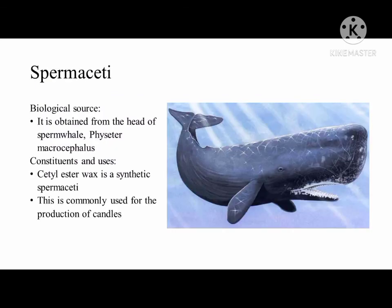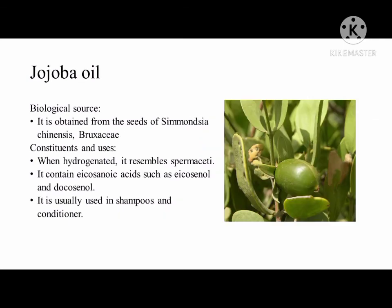The first example is spermaceti, obtained from the head of the sperm whale, Physeter macrocephalus. Cetyl ester wax is a synthetic spermaceti and is commonly used for the production of candles. Next is jojoba oil, obtained from the seeds of Simmondsia chinensis, family Buxaceae. When hydrogenated, jojoba oil resembles spermaceti. It contains icosanoic acids such as eicosenol and docosenol, and is usually used in shampoos and conditioners.